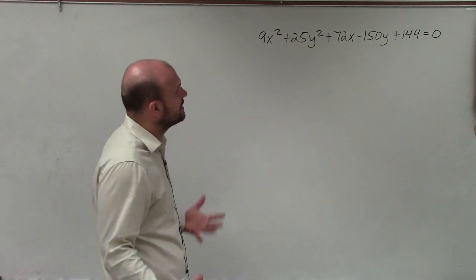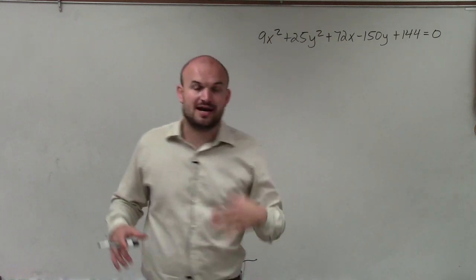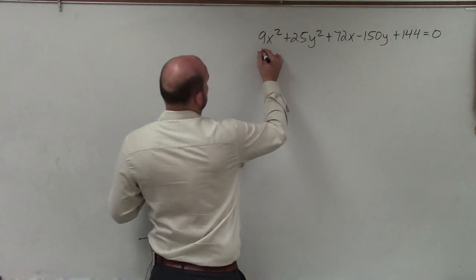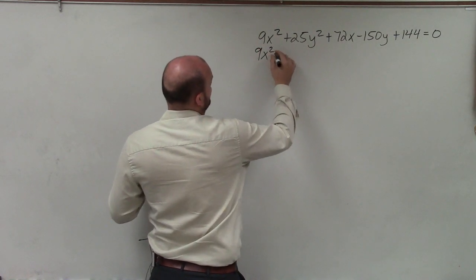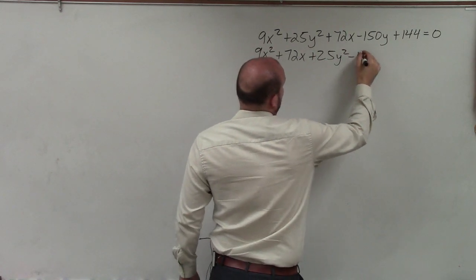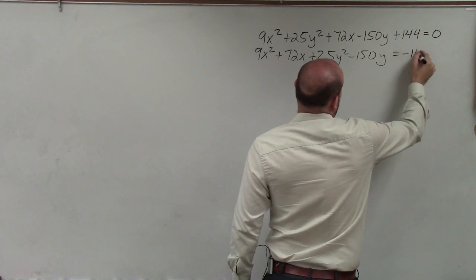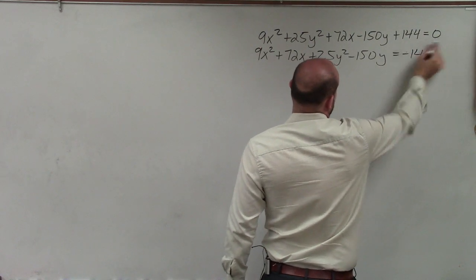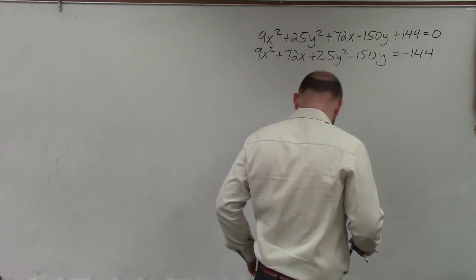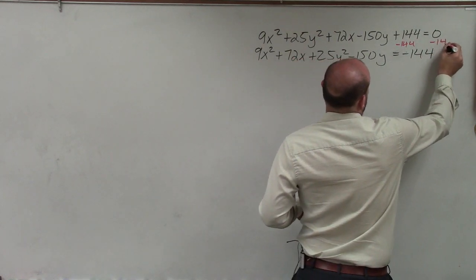The first thing I want to do is group the x's and the y's together and then get the 144 over to the other side. Even though we know the equation has to equal 1, I'm going to worry about that at the end. So I have 9x² + 72x + 25y² - 150y equals negative 144. I just subtracted the 144 over to the other side.